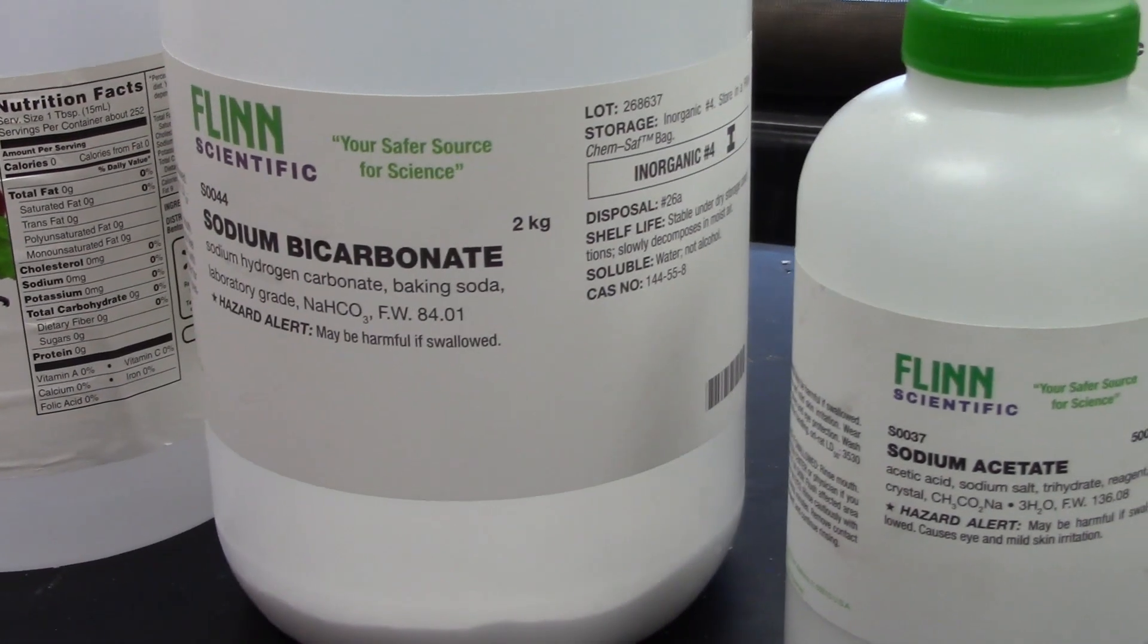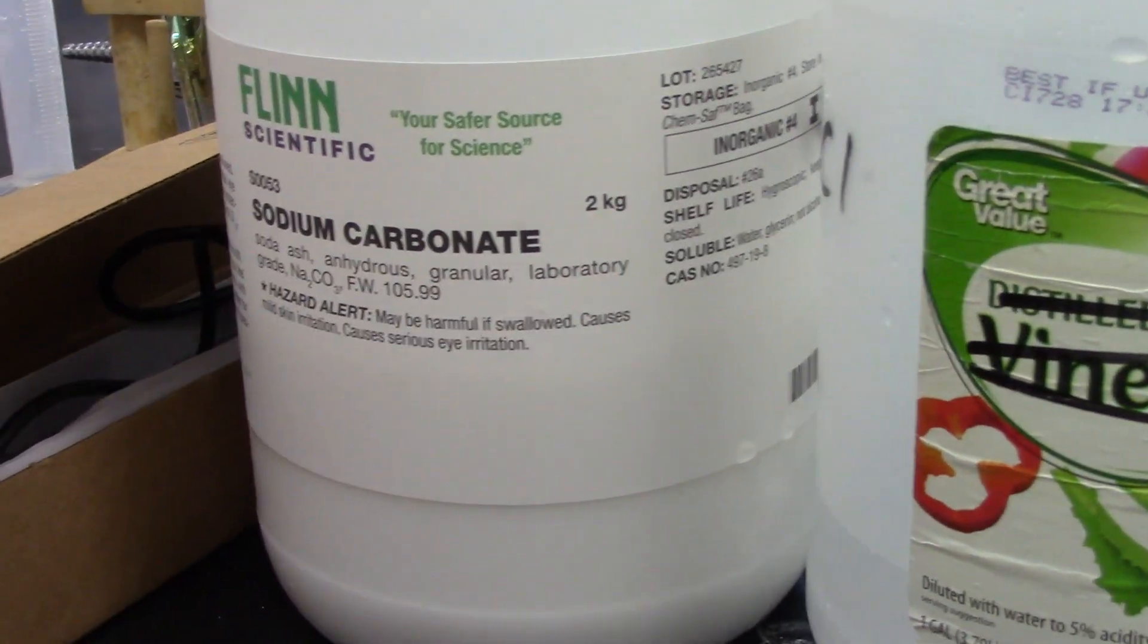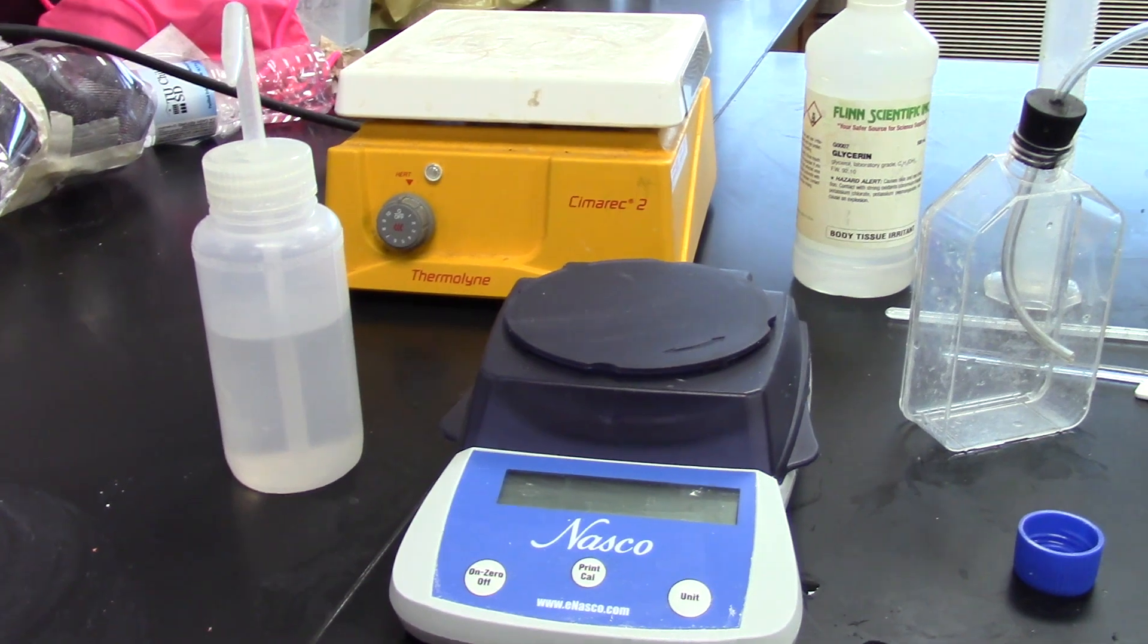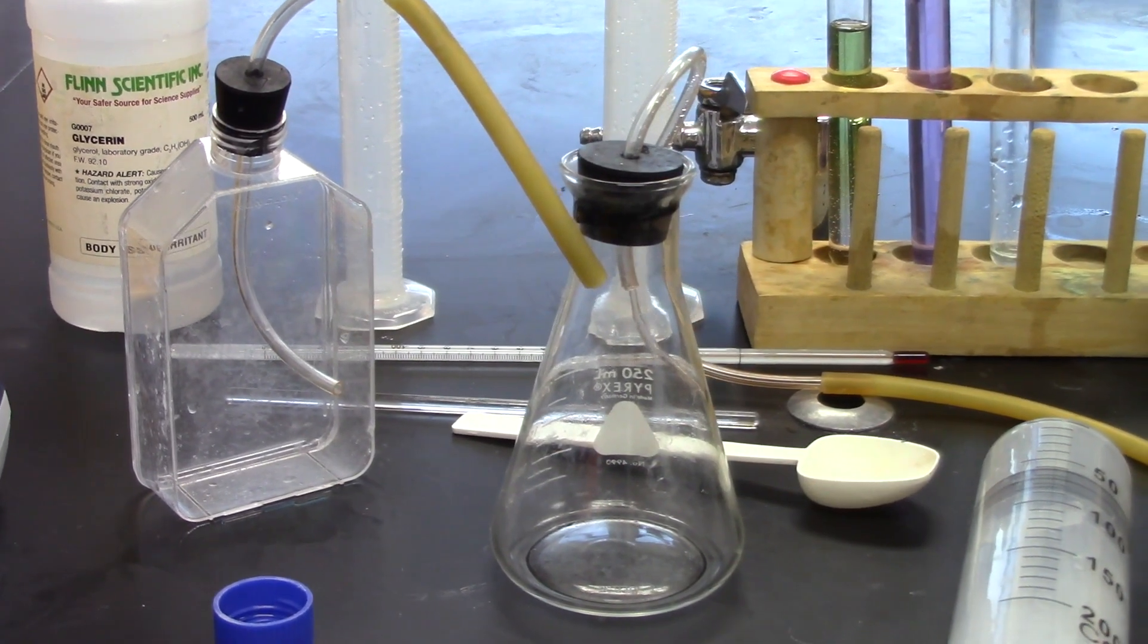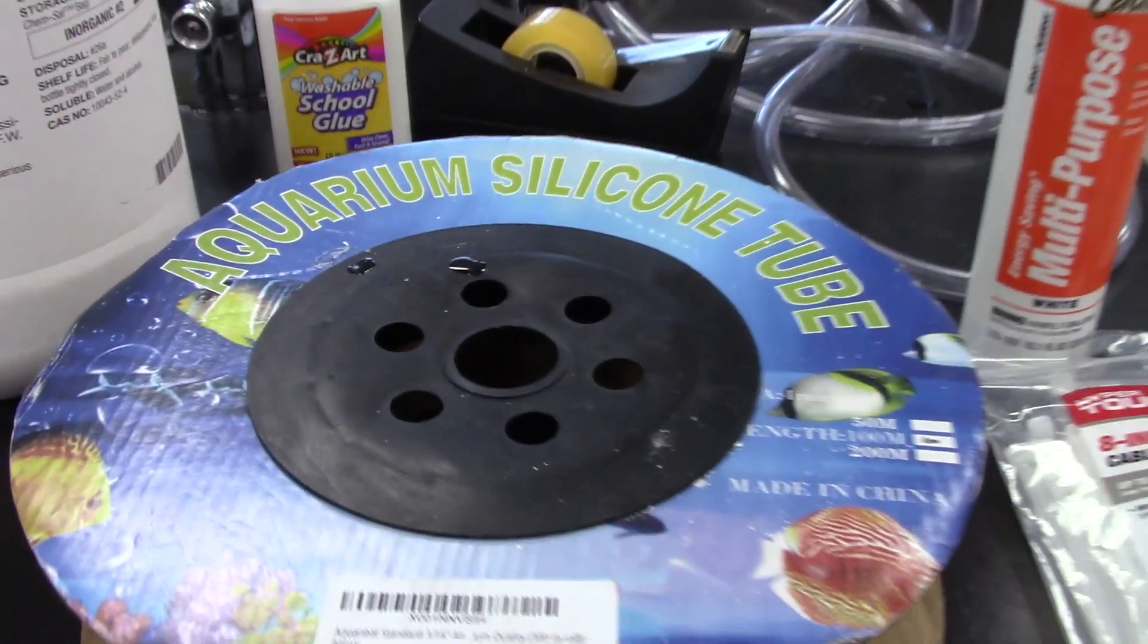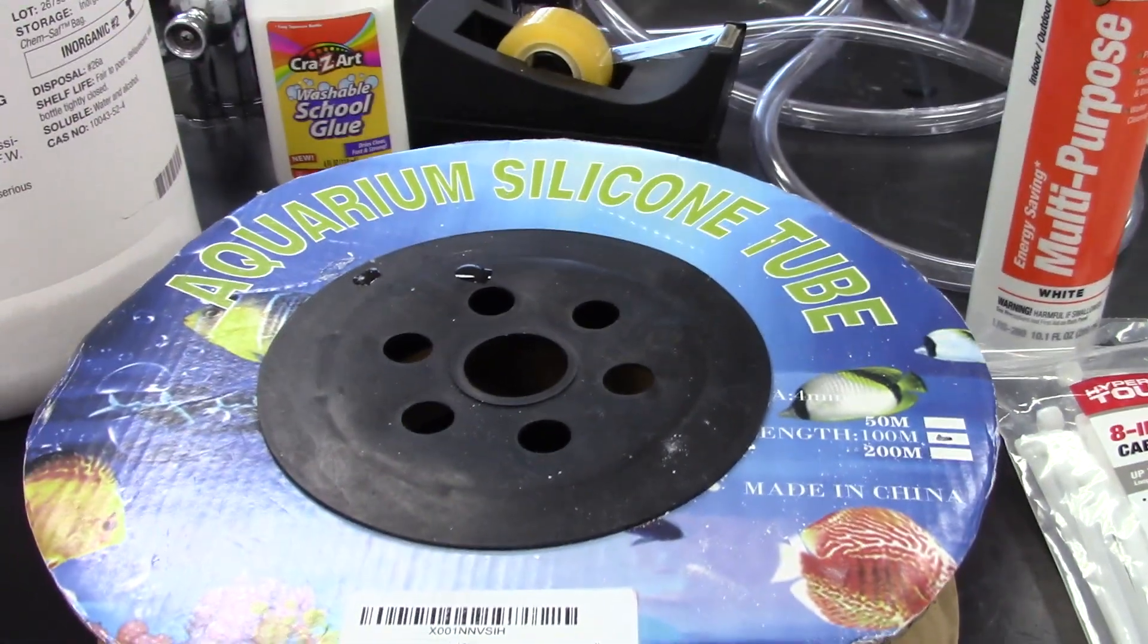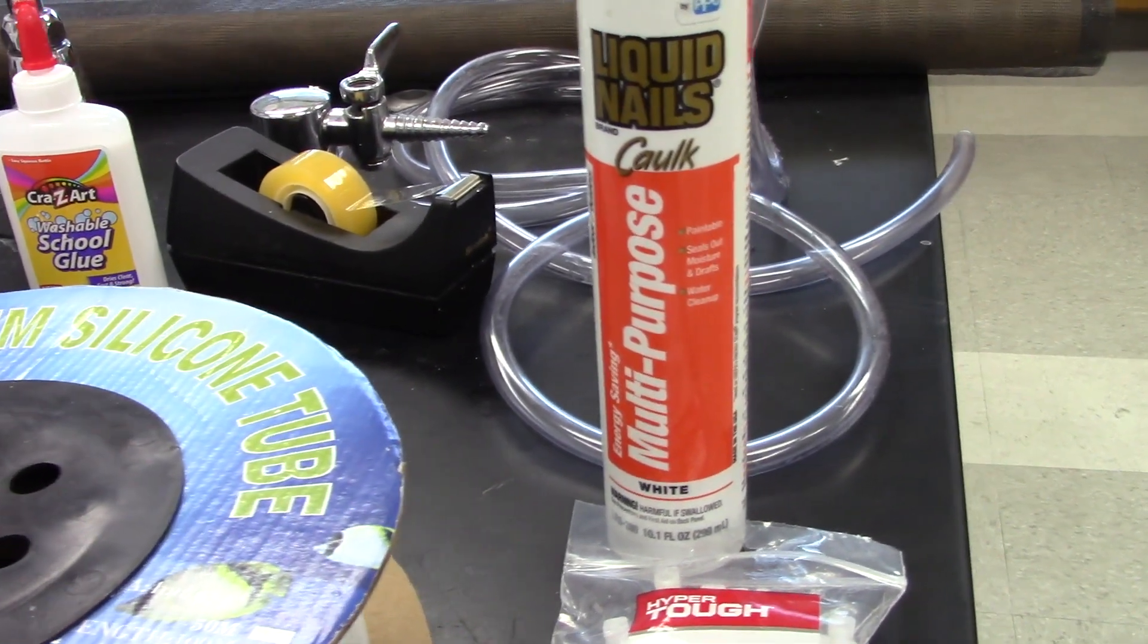So one of the keys to making inquiry-based projects work is having low-cost materials. So we have the standard lab equipment, did most of the early steps by mass measurements before we moved into the pH testing. And so then we had some tubing, cable ties, silicone caulking.